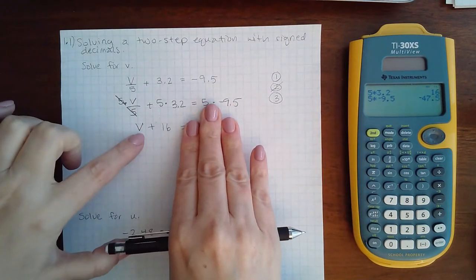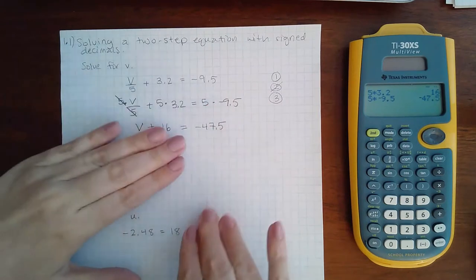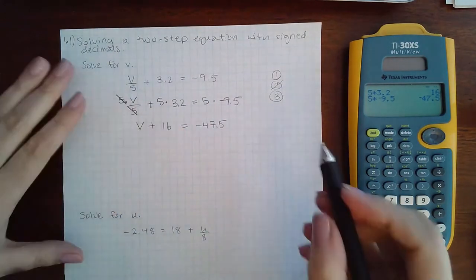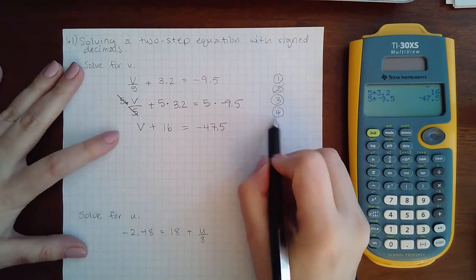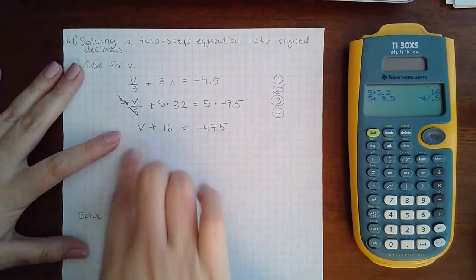and there's one term on that side so nothing to combine. Step four is move all the variables to the left hand side, there's only one variable and it's on the left hand side.